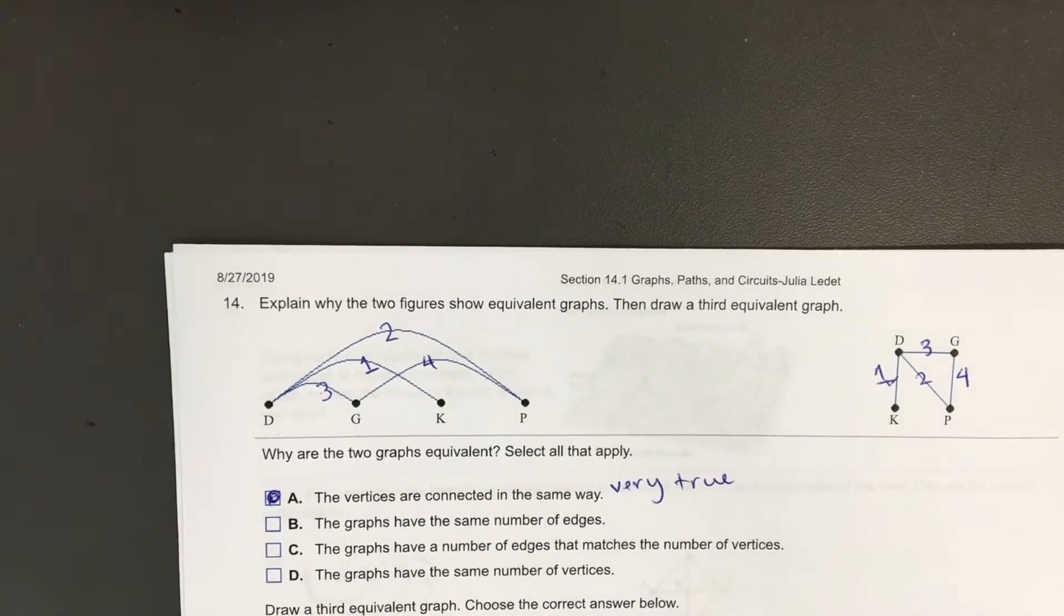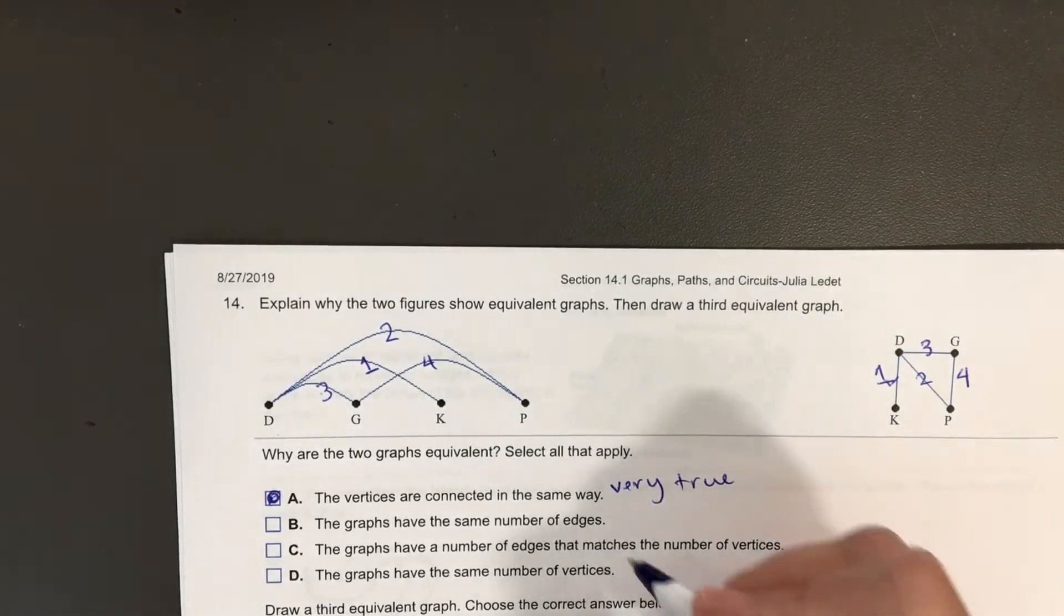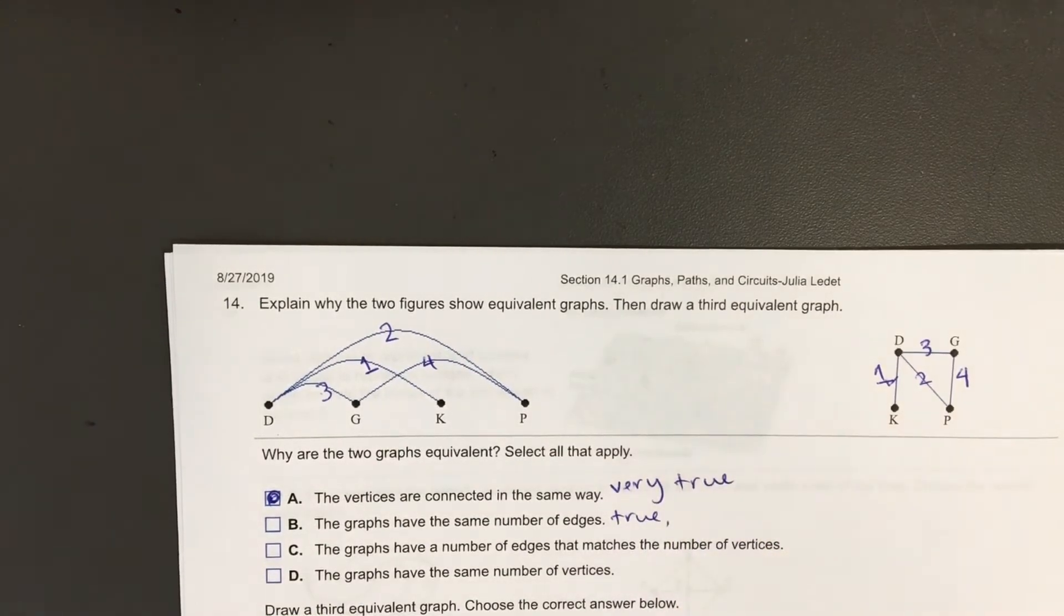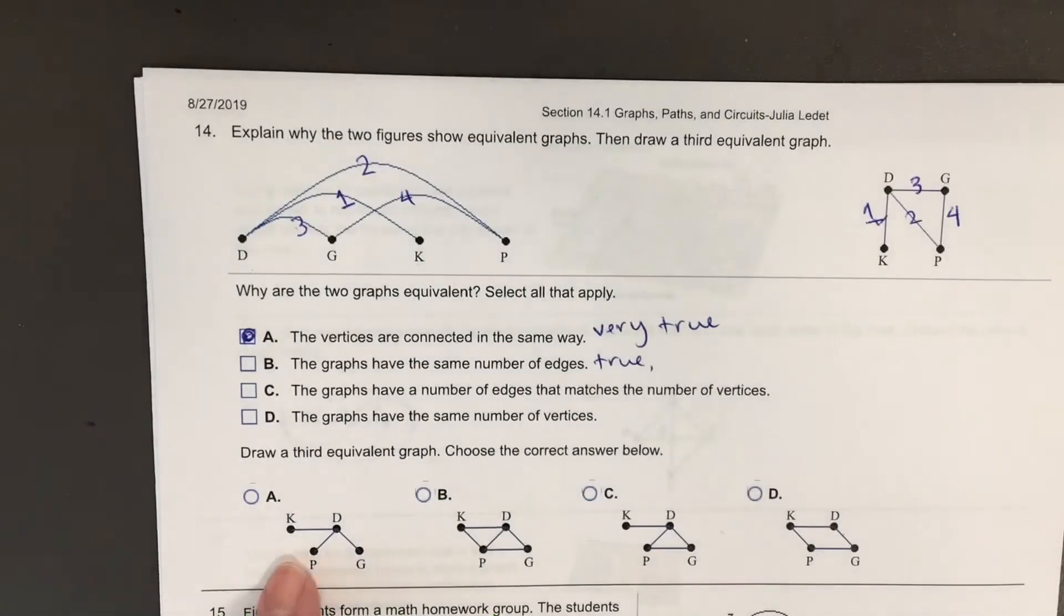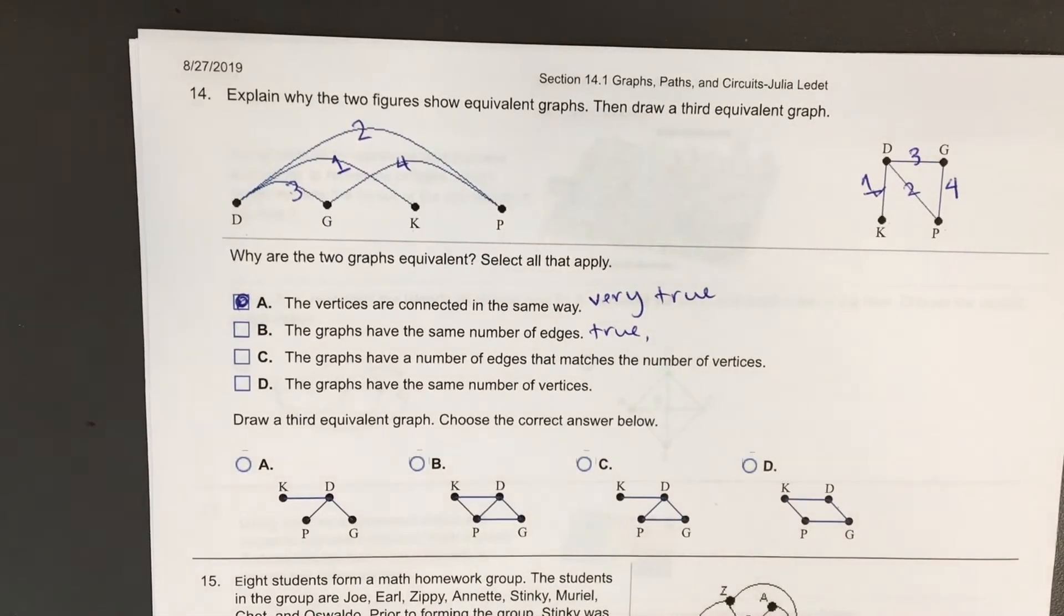Part B, the graphs have the same number of edges. They both have four edges. This is true. But this is not a condition of equivalent graphs. I can show you graphs that have four edges that are not equivalent to this graph. In fact, in the choices below, there's four graphs that all have four edges. No, B does not.